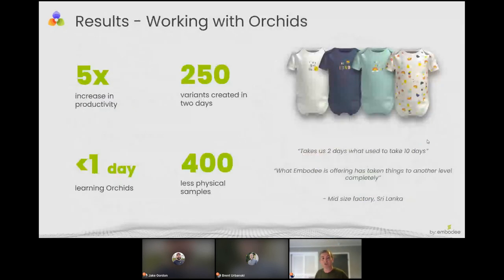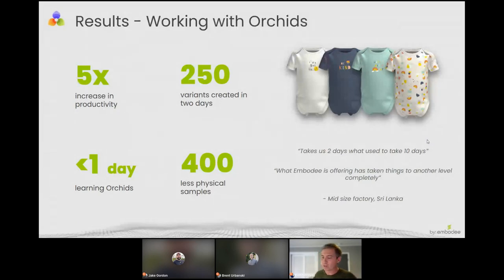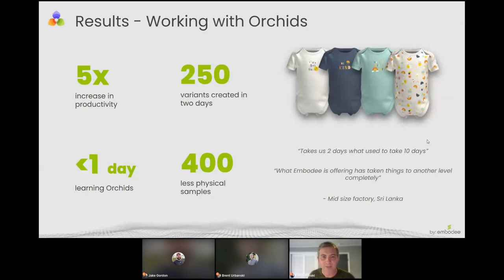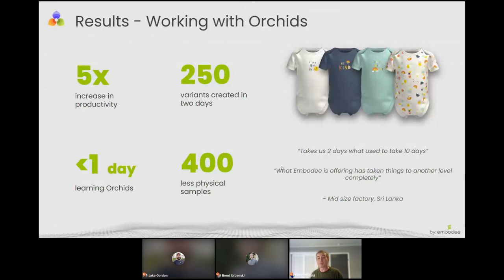Here I want to explain some results we're getting from customers, highlighting one in particular. These results come from a valued customer named Norlanka, headquartered in Sri Lanka with a design team in the UK. In piloting Orchids, they were able to quickly see a five times increase in productivity — they were able to create 250 product variants in two days, where the typical process would have taken them 10 days. The productivity gain was around creating assets for customer presentations to get approval for styles.